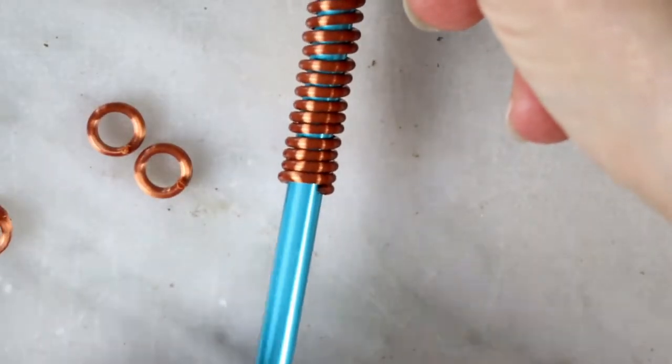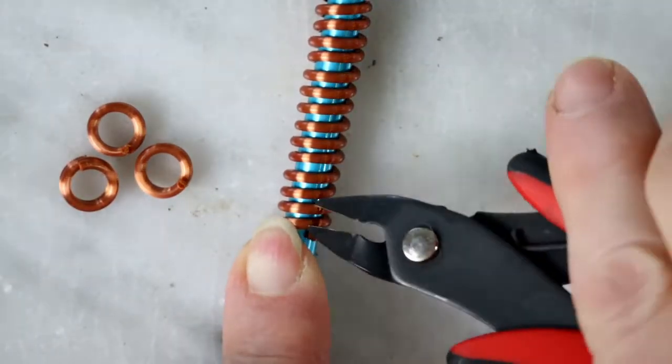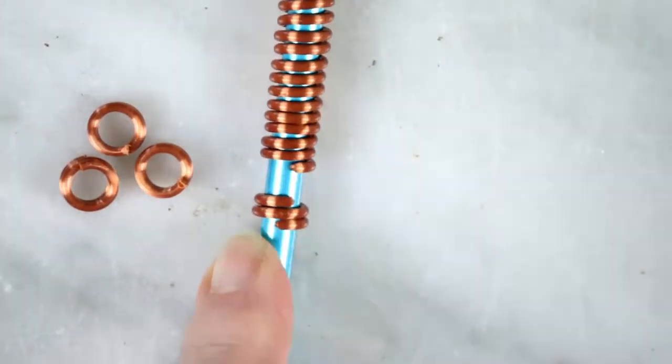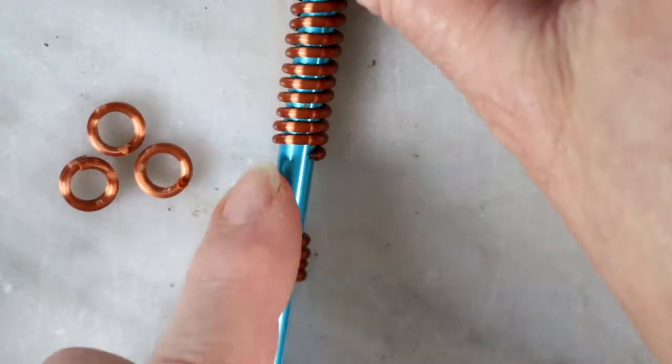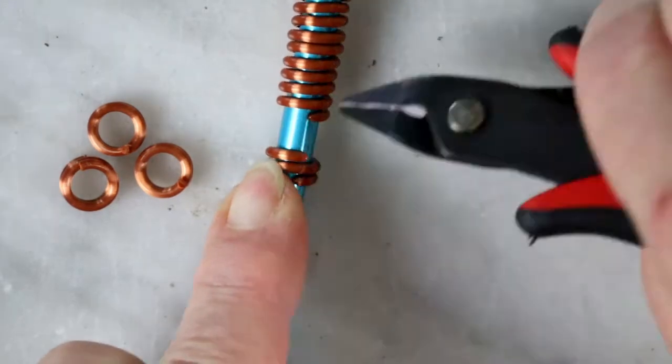With smaller rings it may be easier to cut them right on the forming rod. That way they don't fly all over the place. And you can also see better where to cut it next.